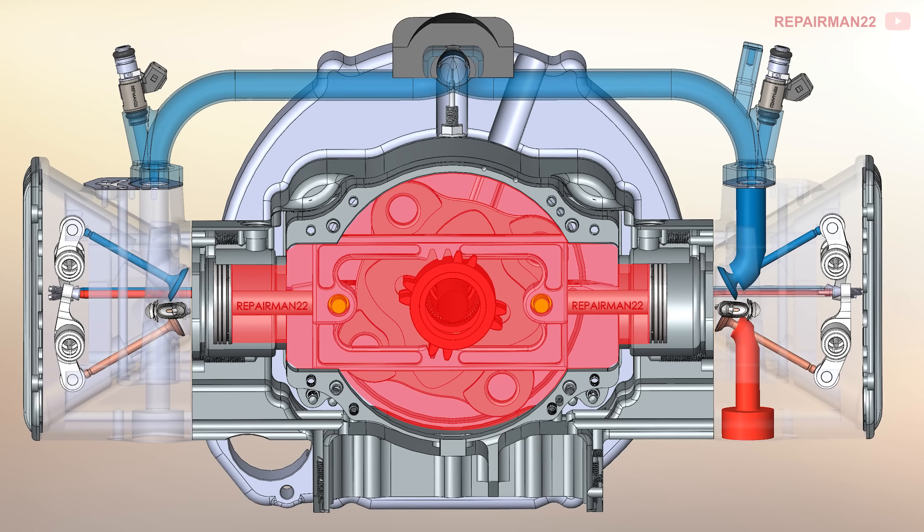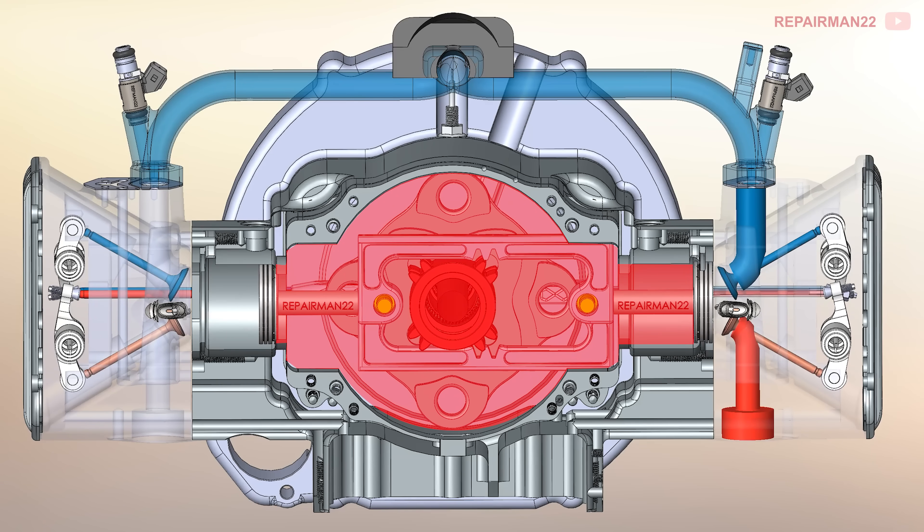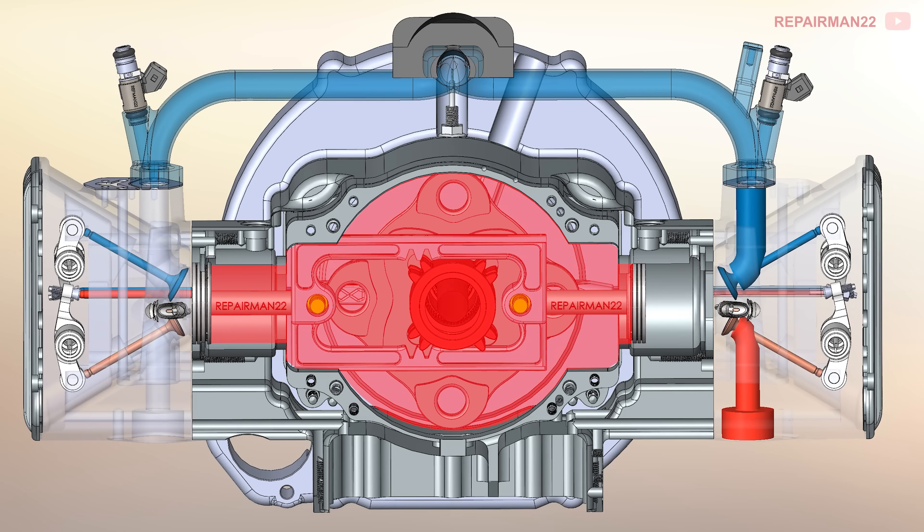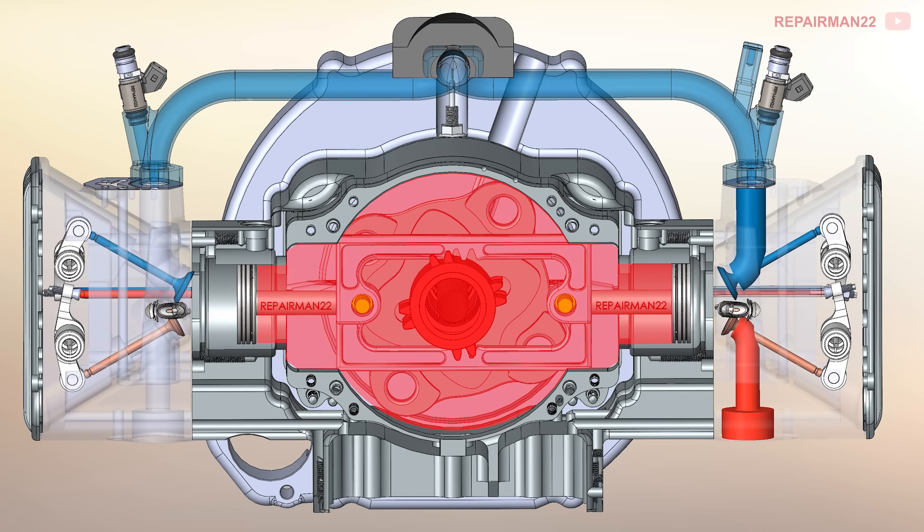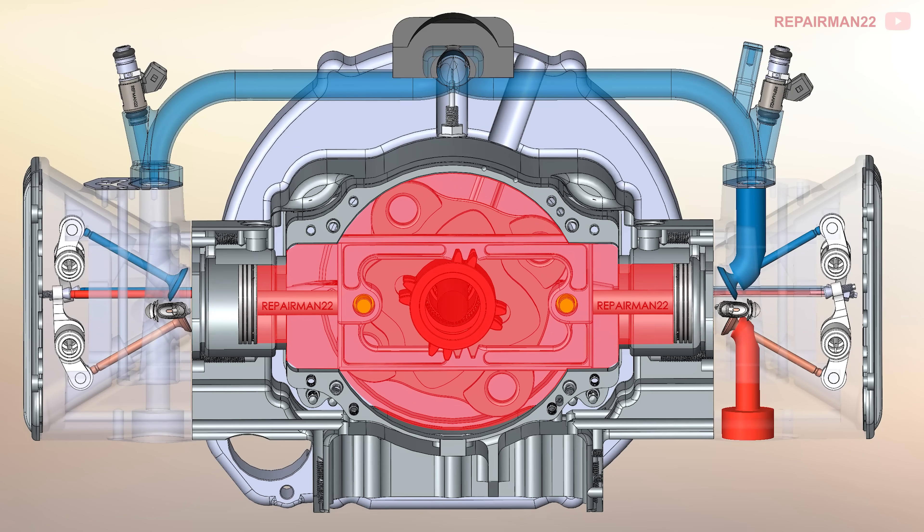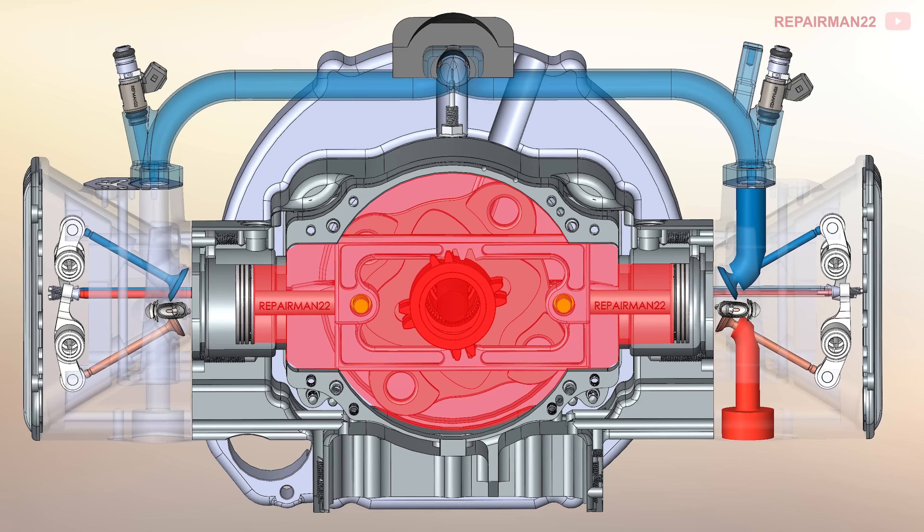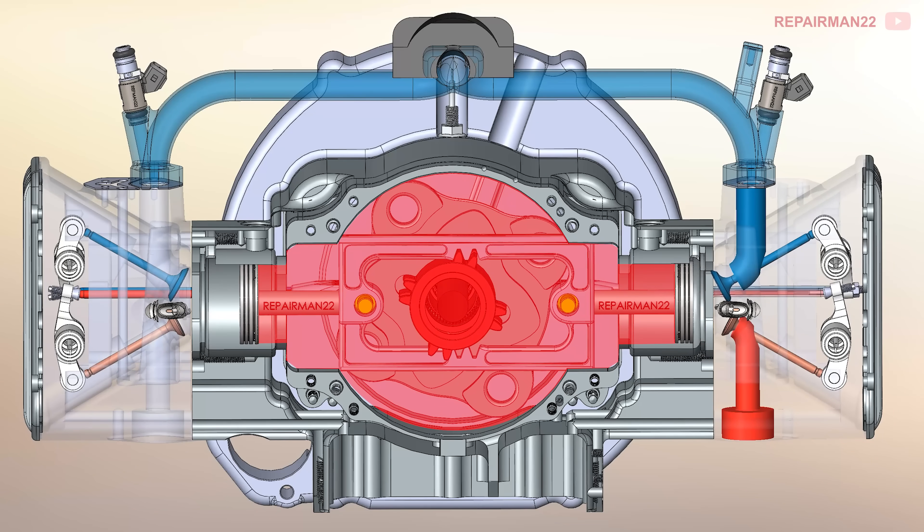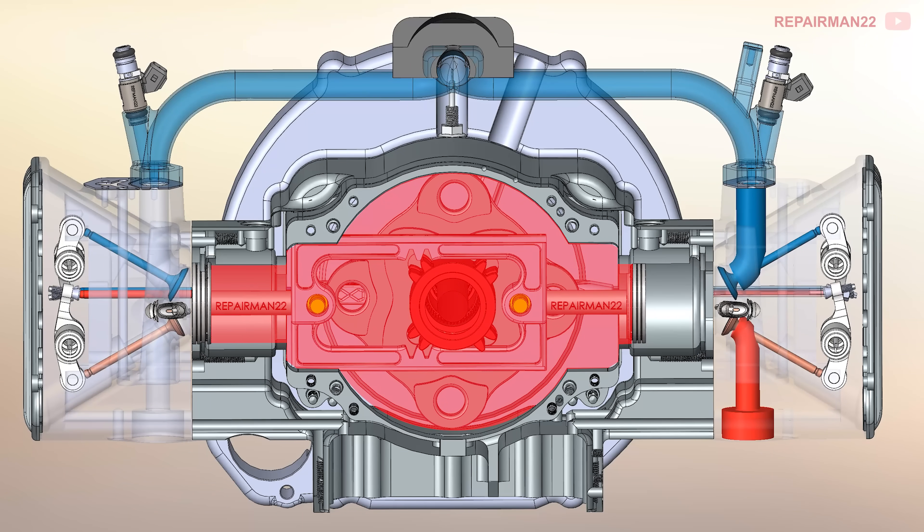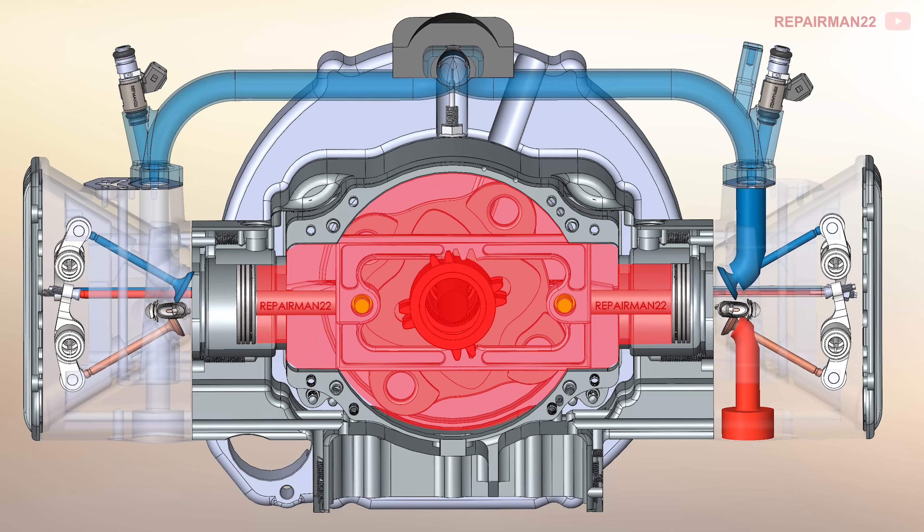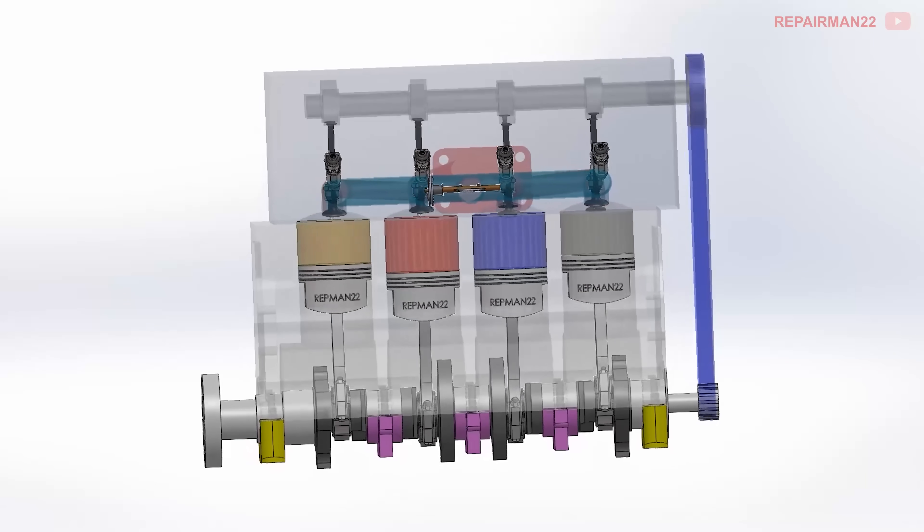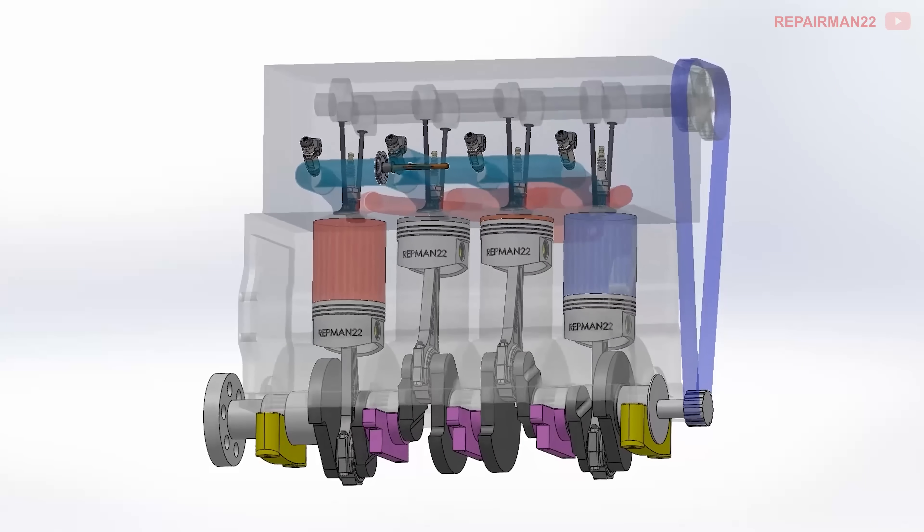There is no volume change in the crankcase. Since both pistons move up and down simultaneously, no compression or vacuum is created, which prevents oil seals from failing and stops the engine from losing fluids. It also avoids power losses as there is no gas compression. This advantage depends on the engine configuration. For example, in an inline 4-cylinder engine, volume variation is minimal.